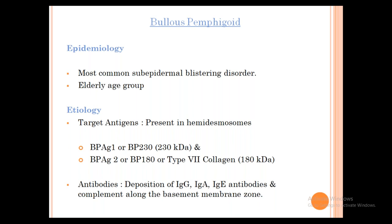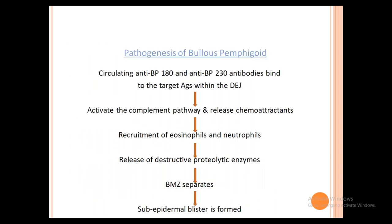Bullous Pemphigoid is the most common sub-epidermal blistering disorder. Antibodies are IgG (sometimes IgA as in Dermatitis Herpetiformis). Pathogenesis: antibodies against BP180 or BP230 bind to target antigens at the dermo-epidermal junction, activating the complement pathway, releasing chemoattractants, recruiting eosinophils and neutrophils, releasing proteolytic enzymes, leading to basement membrane separation and sub-epidermal blister formation.